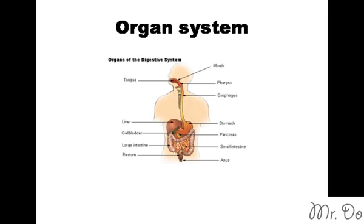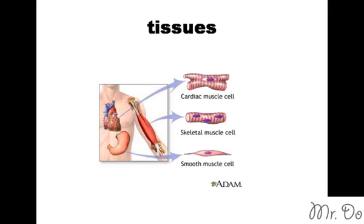A bunch of organs working together makes up an organ system. Like your heart and your blood vessels make up your cardiovascular system. And your mouth, intestines, stomachs, and all those stuff make up your digestive system, for example. Each of your organs is made up of different tissue because they function differently.